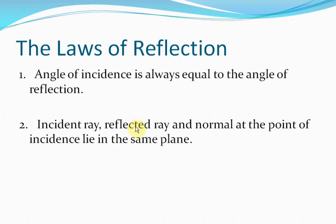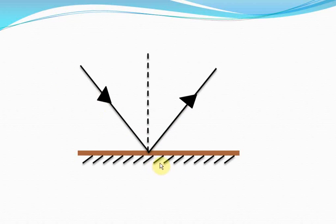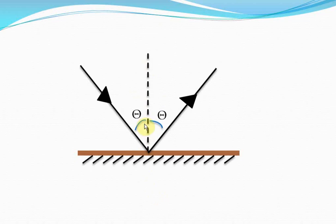We have just stated these laws but what do they actually mean? Let's look at some pictures. Here, the ray that is falling on the mirror is the incident ray. The ray that is coming back after reflection is the reflected ray. The first law of reflection states that the angle of incidence is equal to the angle of reflection — meaning the angle the incident ray makes with the normal at the point of contact is the same as the angle the reflected ray makes with the normal. They are both the same.